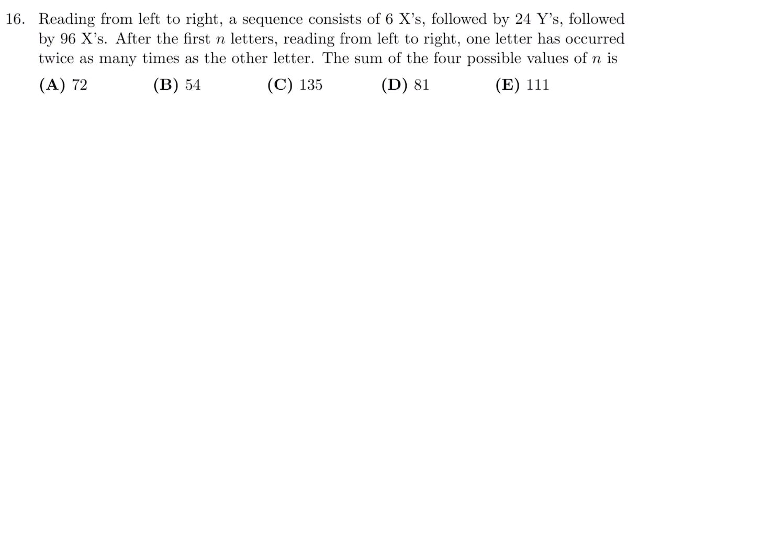Reading from left to right, a sequence consists of six X's followed by 24 Y's followed by 96 X's. After the first N letters, reading from left to right, one letter has occurred twice as many times as the other letter. The sum of the four possible values of N is. So we have six of these X's, and then we have 24 Y's, and then 96 X's. We want a scenario in which one letter occurs twice as many times as the other.